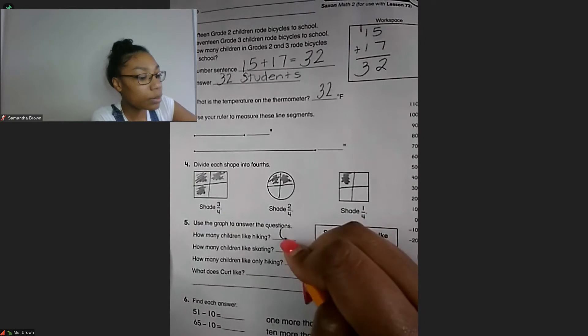Wait for my cam. Yep, 1, 2, 3, 4, 5, 6. And then it says how many children like skating? So same thing, we count only the people that like skating and then the people in the middle. So 1, 2, and 3, 4. And we're counting the people in the middle because that means they like both hiking and skating.